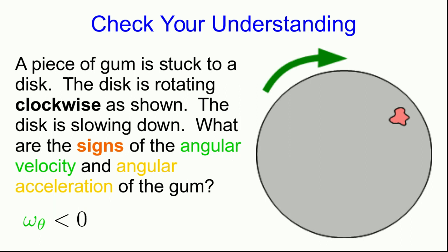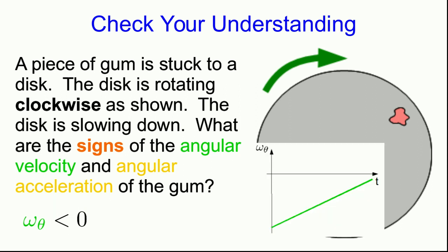The angular acceleration is a little harder to figure out. We know that the angular velocity is negative, and the disk is slowing down, so the angular velocity of this piece of gum must be getting smaller — in other words, less negative. The angular velocity versus time graph could look something like this, and that shows us that the slope is positive — in other words, the angular acceleration is positive.